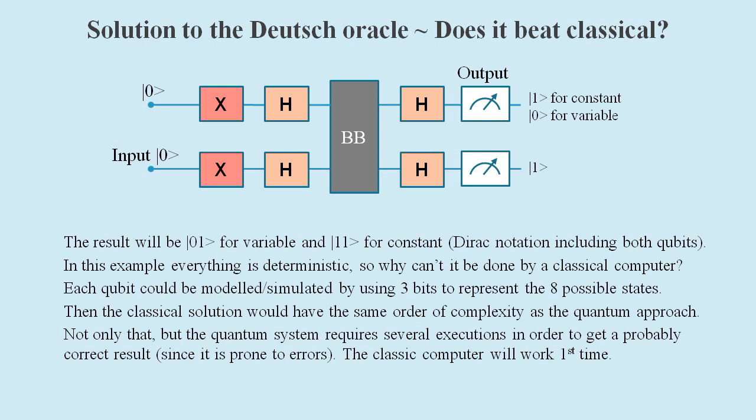Not only that, but the quantum system will require several executions due to errors, whereas the classical system will work first time, making the classical system the easy winner.